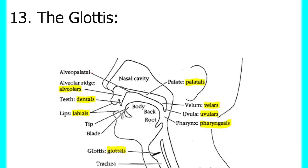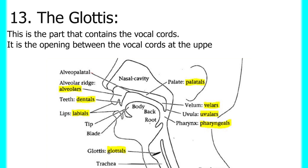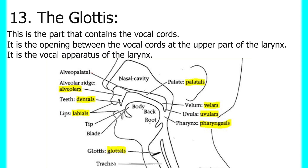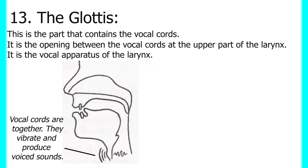Next we have the glottis. The glottis is the part that contains the vocal cords — the opening between the vocal cords at the upper part of the larynx. It is the vocal apparatus of the larynx. The vocal cords, larynx, and glottis are all closely related, functioning together. When the vocal cords are brought together, air forces its way through causing vibration, thereby producing voiced sounds — as in sounds like B and G. You can feel the vibration.